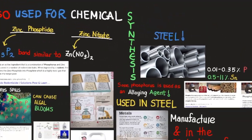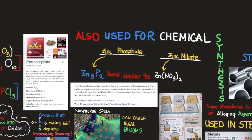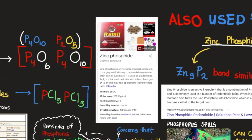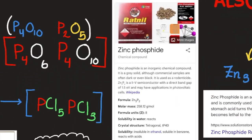It's also used to synthesize various types of products — for example, rat poison. It is often used as a rodenticide. ZN3P2 is a semiconductor with a direct band gap of 1.5 electron volts and may have applications in photovoltaic cells. So apart from rat poison, it's also used in semiconductors in PN junctions such as in photovoltaic cells — another word for that is simply solar cells or solar panels.